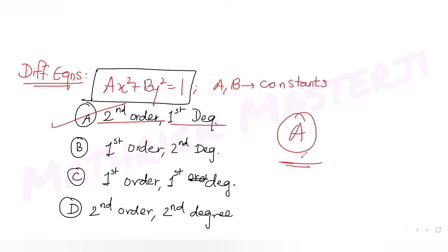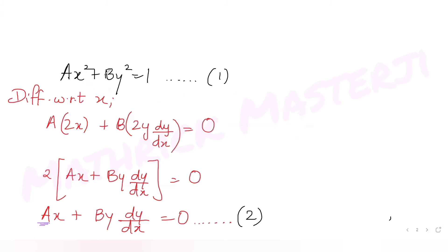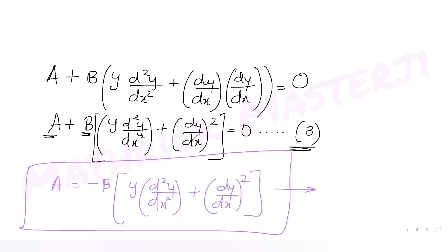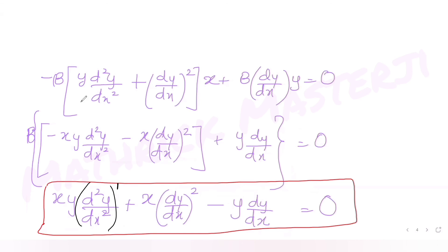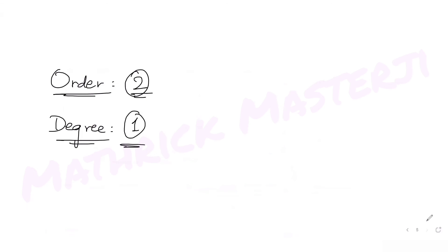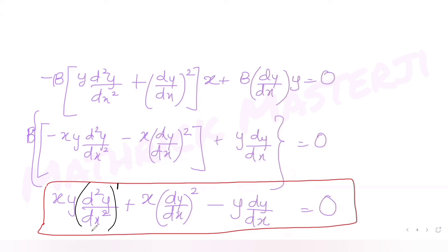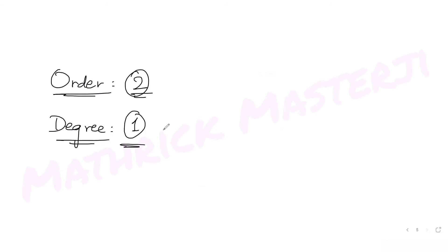To summarize: we were given the solution ax² + by² = 1 and needed to find the differential equation. We differentiated once to get equation 2, differentiated again to get equation 3, then eliminated constants a and b by expressing a in terms of b from equation 3 and substituting into equation 2. The resulting differential equation has order 2 and degree 1, matching option A.